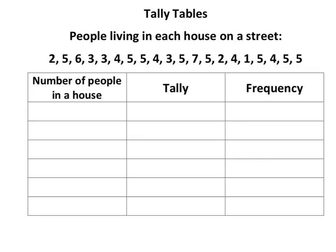We're looking at tally tables and frequency tables, sometimes called tally charts. I've partly drawn out the table and you've got a list of data at the top here — number of people in the house. We need to find the smallest number in the list, which is one, and the biggest number is seven. So we fill in two, three, four, five, six, seven along the rows.